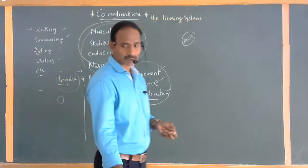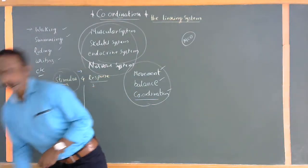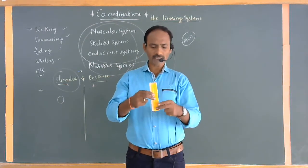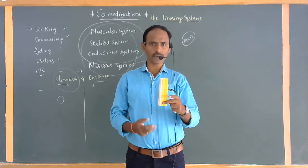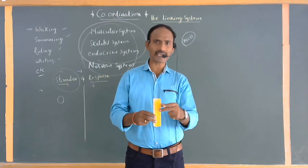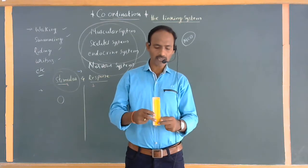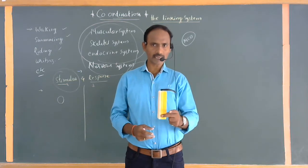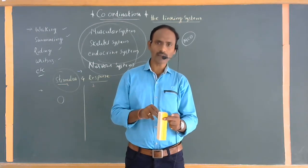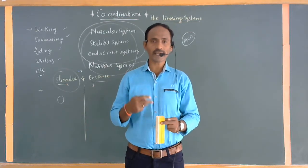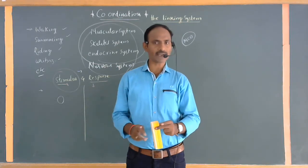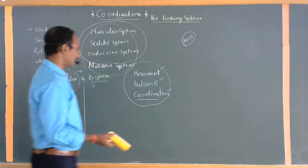There is a small activity in your textbook: hold a long scale or ruler, and have someone drop it within a fraction of a second to see if you can catch it. Each time you try, you may not catch it at the same position, because our coordination changes from time to time depending on concentration, muscular movement, and several other factors. These are examples of stimulus and response actions.